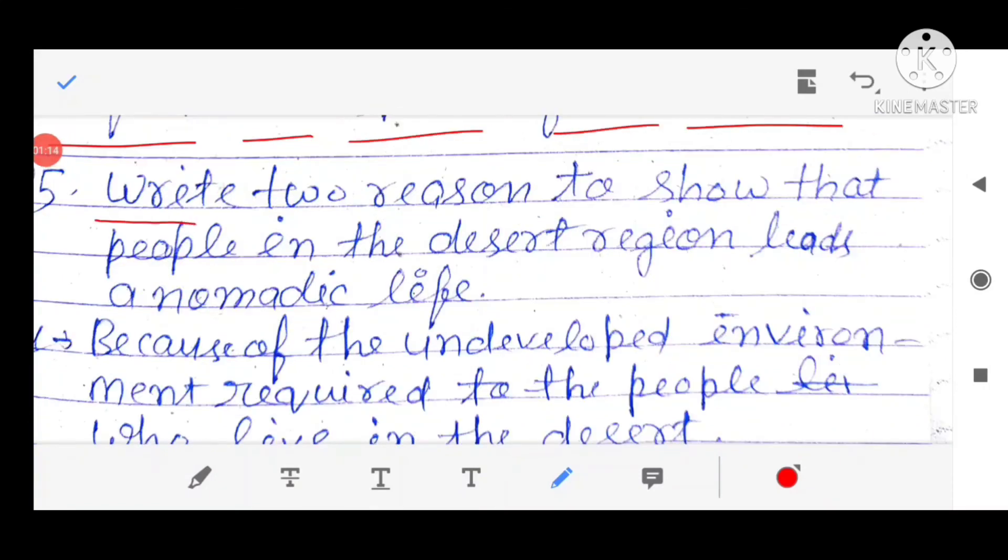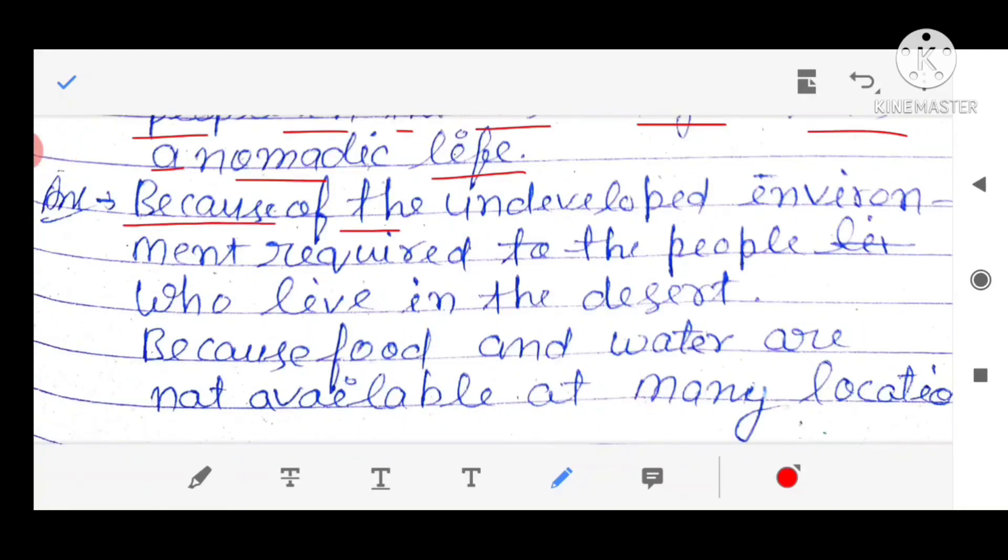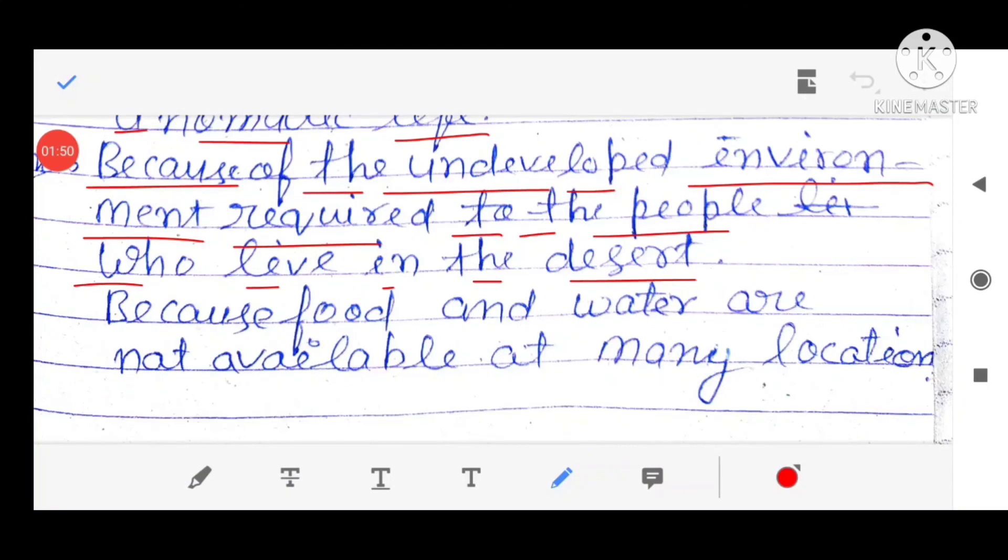Write two reasons to show that people in the desert region lead a nomadic life. Because of the underdeveloped environment required by the people who live in the desert. Second reason is because food and water are not available at many locations.